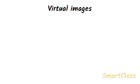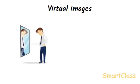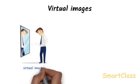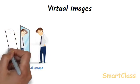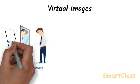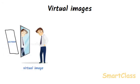Virtual images: The image which cannot be obtained on a screen is called a virtual image. A virtual image can be seen only by looking into a mirror. The image of our body formed by a plain mirror cannot be received on a screen — it can be seen only by looking into the mirror. So our image in a plain mirror is an example of a virtual image. If we place a screen behind the plain mirror, we will not see any image on it, as there are no light rays behind the mirror. The virtual image is just an illusion, and hence virtual images are also called unreal images.